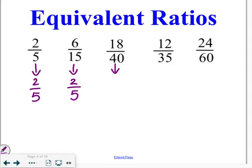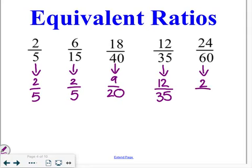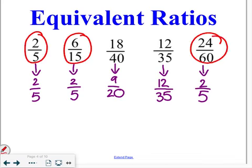18 fortieths. Both of those can be reduced by dividing by 2. I end up with 9 twentieths. Next one, 12 and 35 are relatively prime. They can't be divided by the same number. So, that fraction stays the same. The last one, 24 out of 60. Both of those can be divided by 12, and we end up with 2 out of 5. So, our equivalent ratios are the ones that reduce to the same fraction. 2 fifths, 6 fifteenths, and 24 sixtieths are all equivalent ratios.